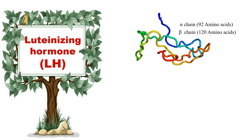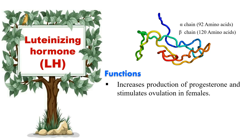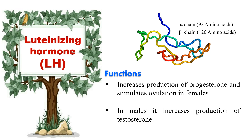Next hormone is luteinizing hormone (LH), also produced by the anterior pituitary. It is a heterodimeric glycoprotein with two subunits, alpha and beta. Similar to TSH, LH has an alpha chain of 92 amino acids and a beta chain of 120 amino acids. Its function is to increase the production of progesterone and stimulate ovulation in females, while in males it increases the production of testosterone.